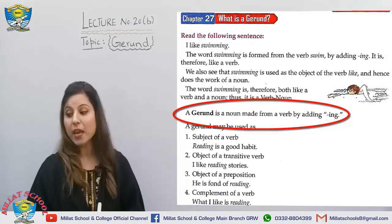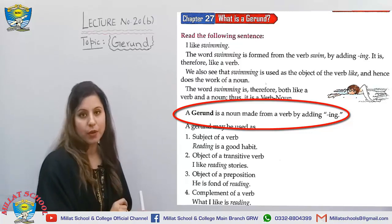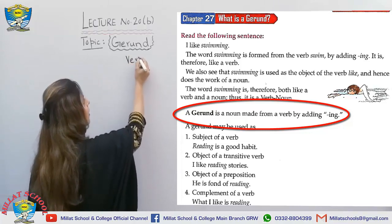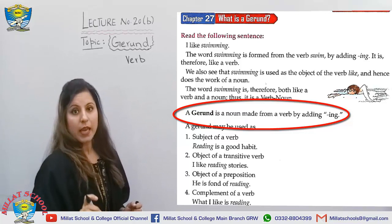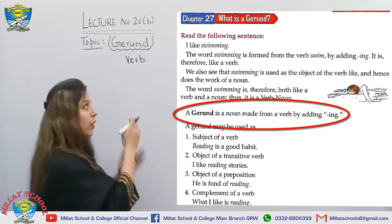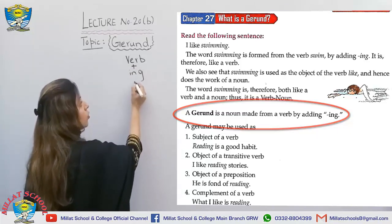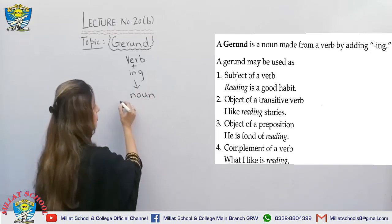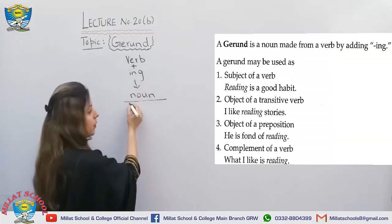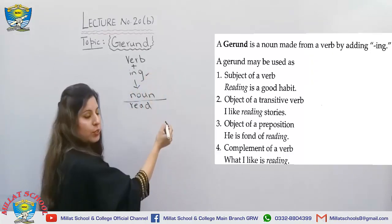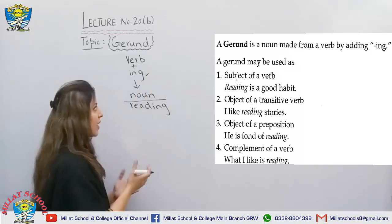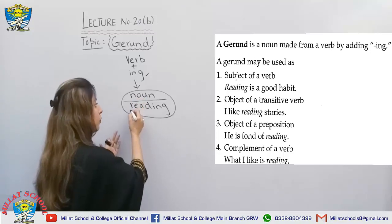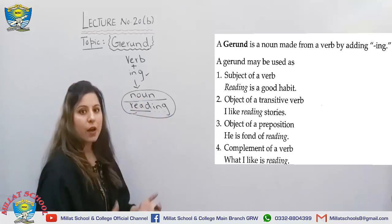A gerund is a noun made from a verb by adding -ing to it. Few people think that it is actually a verb, but it's not a verb — it is made from a verb. We add -ing to it to make it a noun. For example, if 'read' is a verb and we add -ing to it, it becomes 'reading' — that's the noun, and that's our gerund.